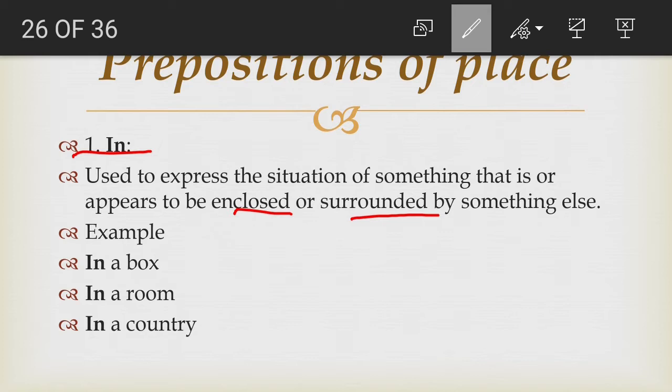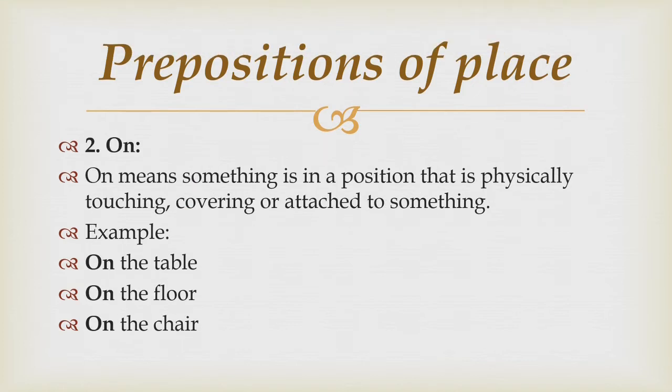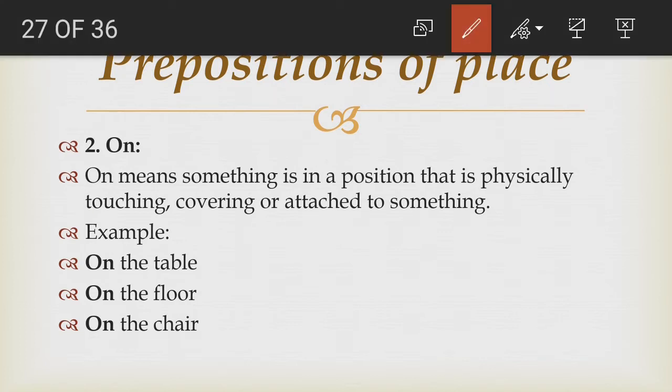'In a room' — I am in a room. 'In a country' — it has boundaries or is an enclosed place, so we use 'in.' Next, the preposition 'on.' 'On' means something is in a position that is physically touching, covering, or attached to something. If something is touched, covered, or attached to something, we use 'on.' For example, 'on the table' — the book is on the table.